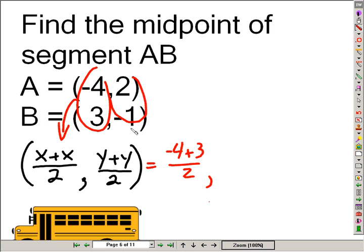Comma, and then the y numbers placed in here. 2 plus a negative 1, excuse me, negative 1 divided by 2. And this is the coordinates of a point, parentheses with a comma.